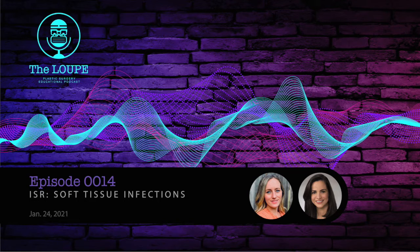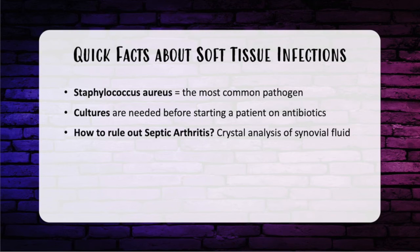Repetition is key. Now let's get started. The most common pathogen associated with hand infections is Staph aureus.